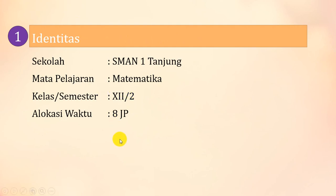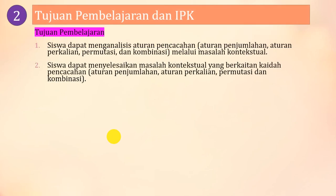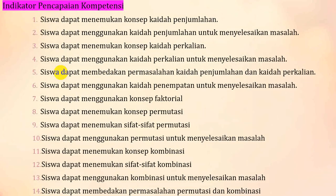Jadi komponen RPP yang saya buat ini beda sedikit dengan komponen RPP berdasarkan Edaran Menteri 14/2019 — saya tambahkan identitas dan indikator pencapaian kompetensi. Contohnya: identitas berisi sekolah, mata pelajaran, kelas, alokasi waktu. RPP tanpa identitas itu ibarat orang tanpa nama. Kemudian tujuan pembelajaran diambil dari KD pengetahuan dan KD keterampilan. Misalkan 'siswa dapat menganalisis' diambil dari KD pengetahuan, dan 'siswa dapat menyelesaikan masalah kontekstual' diambil dari KD keterampilan. Supaya lebih terarah, dilengkapi dengan IPK sebagai turunan dari tujuan pembelajaran.